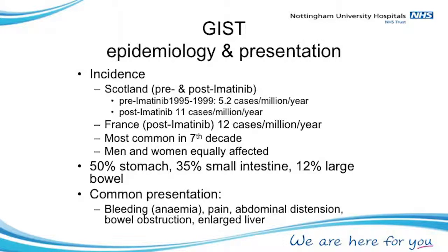GIST is most common in the seventh decade but it can occur in children and young adults — this is part of the paediatric GIST and the PAUSE GIST. Men and women are equally affected. It occurs mainly in the stomach but can occur in other parts of the bowel or outside the bowel. The common presentation is bleeding — not necessarily bleeding you'd notice. You might find your stools go dark, or you might feel a bit more short of breath, tired, or dizzy when you stand up — symptoms of anaemia.